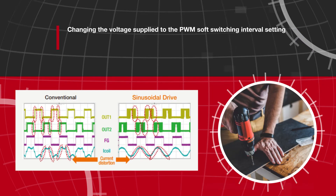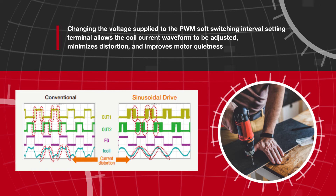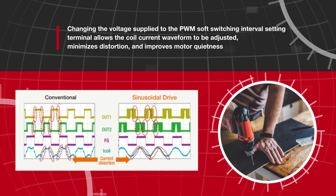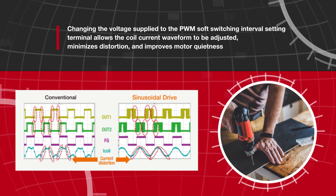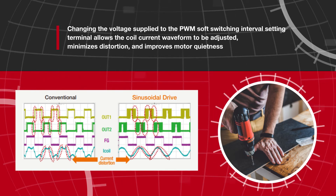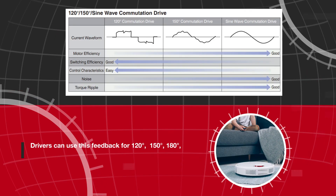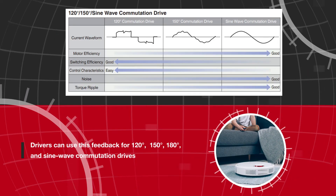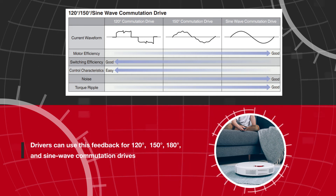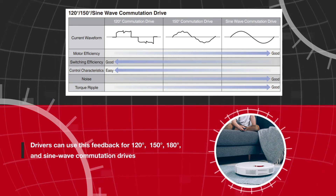In a brushless motor drive, Hall signals are used to generate PWM soft switching waveforms while the PWM is driven through the input control signal. The Hall elements in brushless DC motors also provide feedback on the position of the rotor.